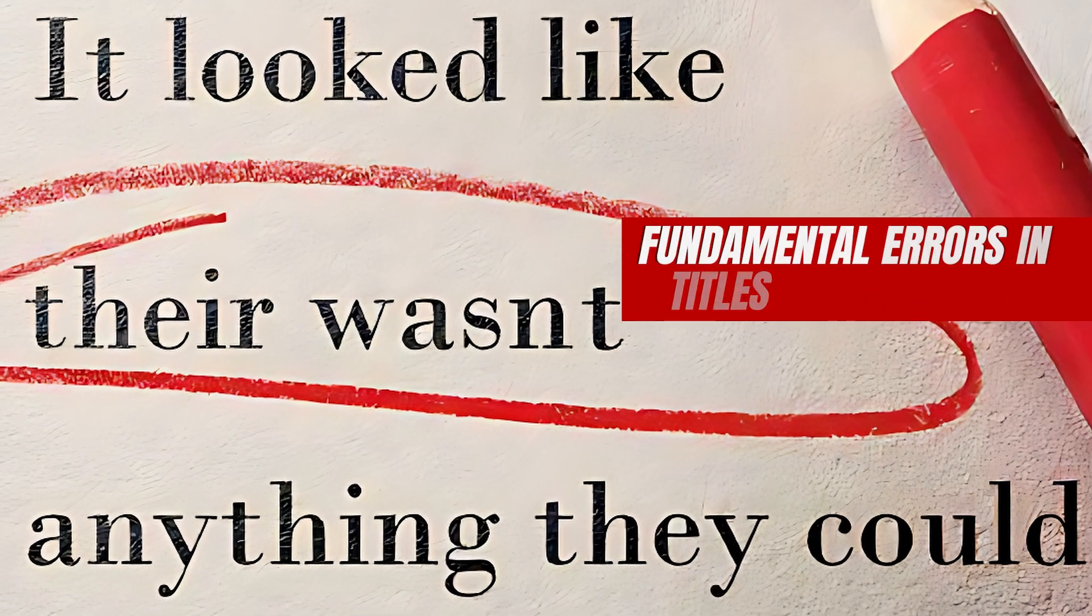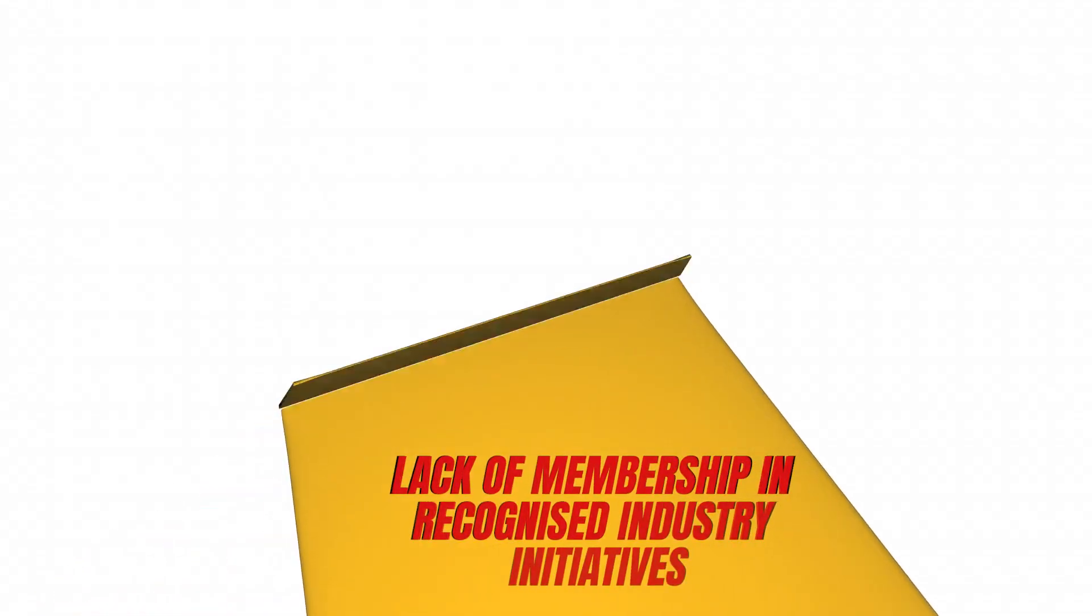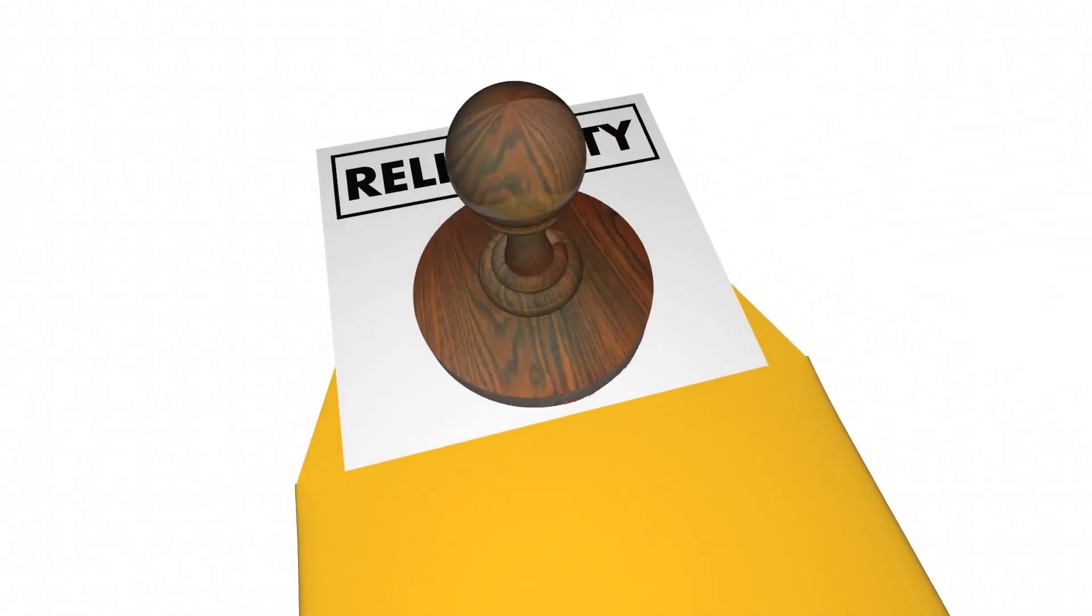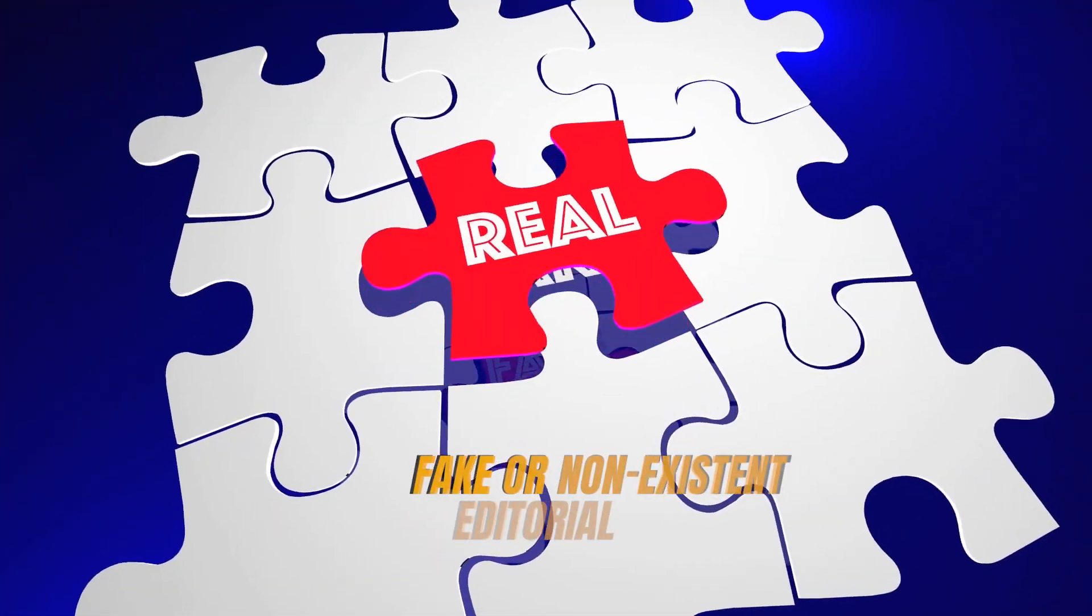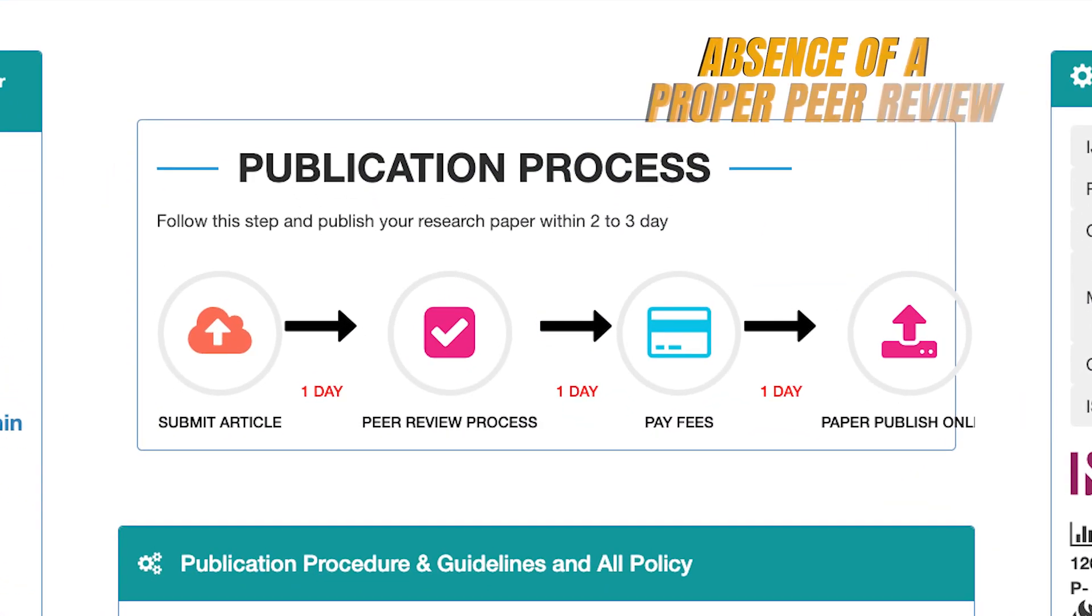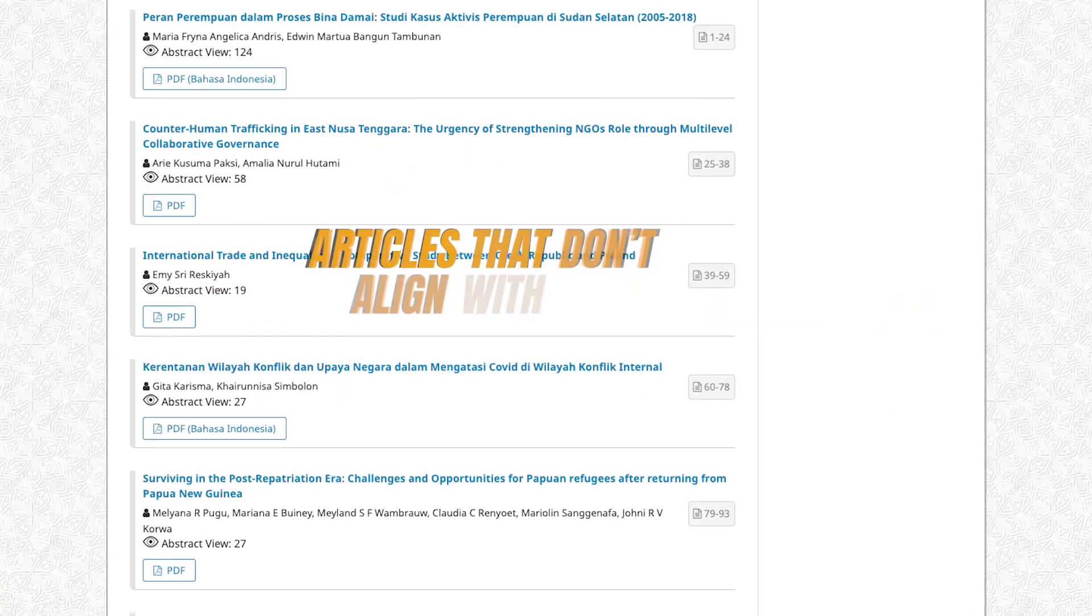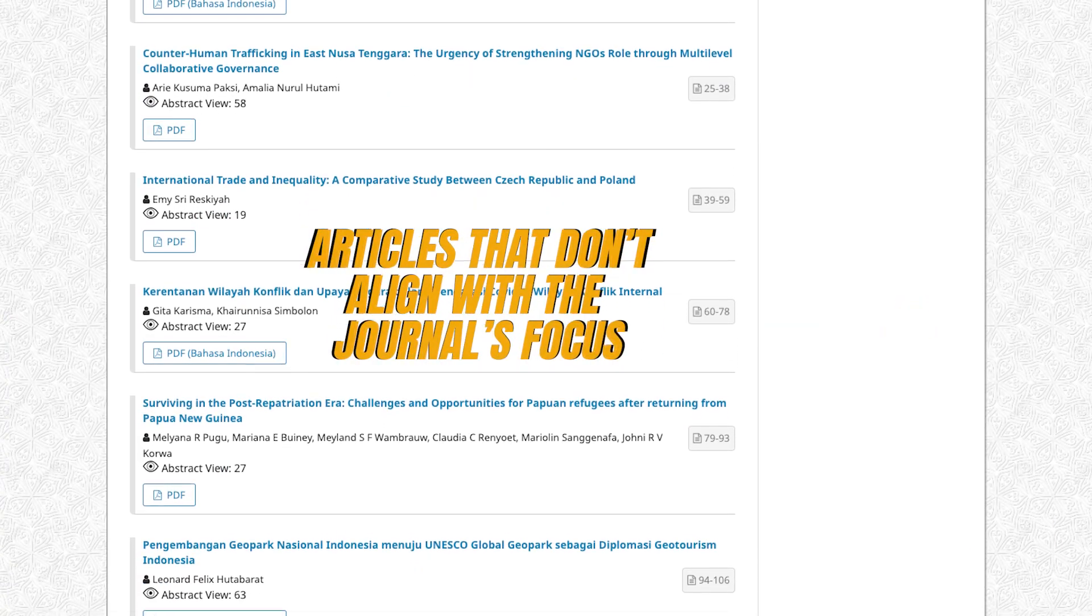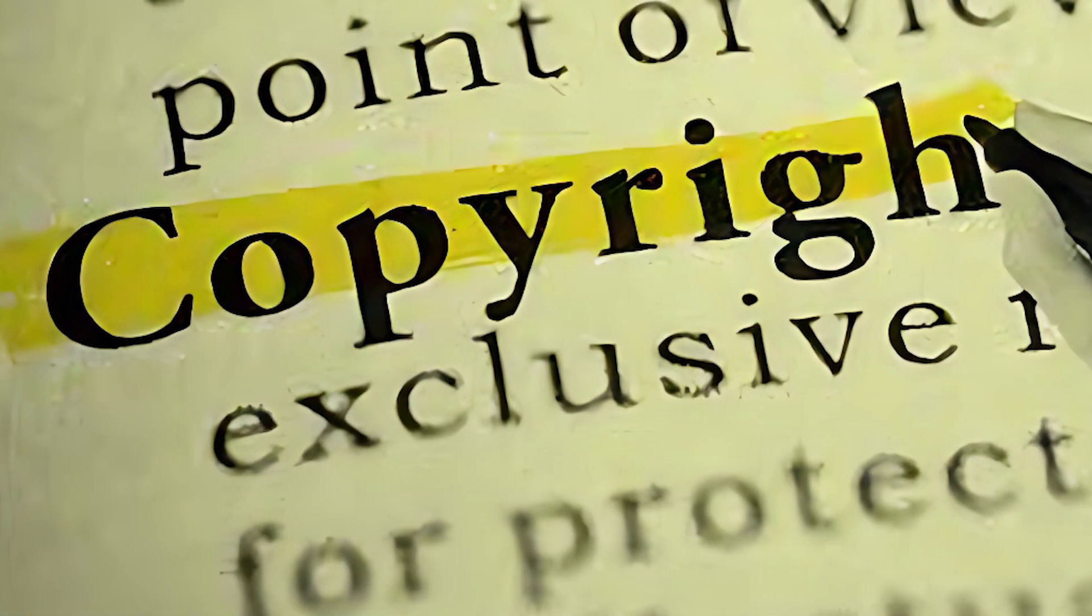Look for indicators such as inconsistent national or international affiliations, fundamental errors in titles and abstracts, lack of membership in recognized industry initiatives, unverifiable contact information, fake or non-existent editorial boards, absence of a proper peer review process or unrealistic publication timelines, articles that don't align with the journal's focus, submission fees or undisclosed charges, and copyright issues.